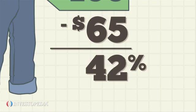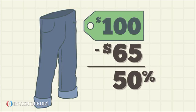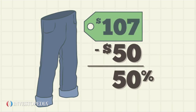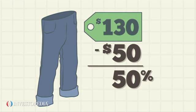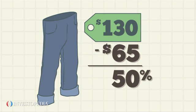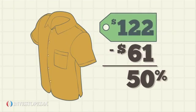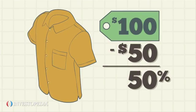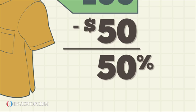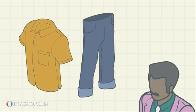Ida wants to see a contribution margin ratio of 50%. He determines he can achieve this either by reducing variable costs to $50, by increasing the price of jeans to $130, or through some combination of the two. Another option is to quit selling jeans entirely and focus on other products, such as button-down shirts, which already have a contribution margin of at least 50%. Ida might also want to calculate the contribution margin for all of his products in sum.